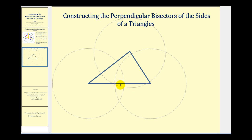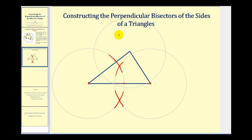The only restriction is that the radius of the compass must be more than half the length of the longest side of the triangle. So we'll put the point of the compass here, and put the pencil past the midpoint. To bisect this side of the triangle, we'll swing an arc above and below this side with the point of the compass here. Then leaving the radius the same, we'll put the point of the compass at the other end and swing an arc above and below. The perpendicular bisector passes through the intersection points of these arcs. Notice how it forms a right angle with this side and cuts it into two congruent segments.